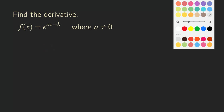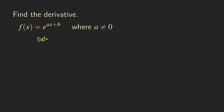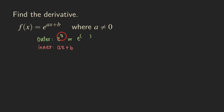The outer function is e to the x, or you can simply write it as e to the blank — the exponential function applied to whatever is in the exponent. The inner function is the exponent itself, which is ax plus b. Just imagine that you put the inner function into the outer function — substitute ax plus b into x, or place it inside the blank — and that gives you back the original function.